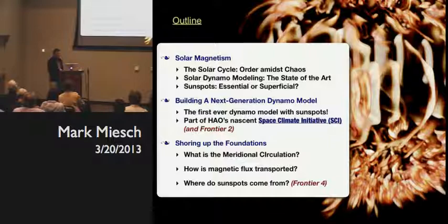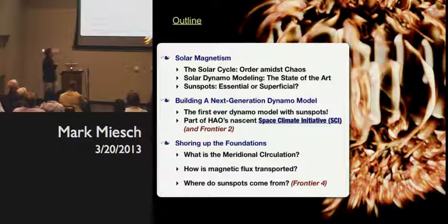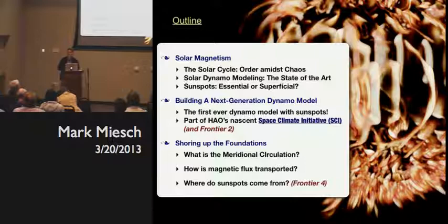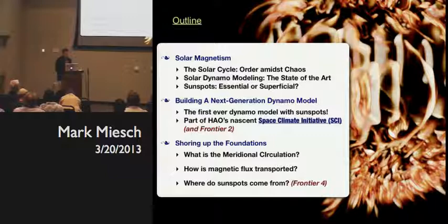I'll start by describing the challenge we have, what observations tell us about the solar cycle and solar magnetism. I'll talk about the solar cycle as a manifestation of order amidst chaos. I'll describe the current state of dynamo modeling, and in particular a very important hot-topic question regarding sunspots: are they essential for the operation of the dynamo, or are they a byproduct, a superficial byproduct, of the dynamo action that occurs in the deep interior? And then I'll tell you about how we're going beyond this state-of-the-art and building a next-generation dynamo model.